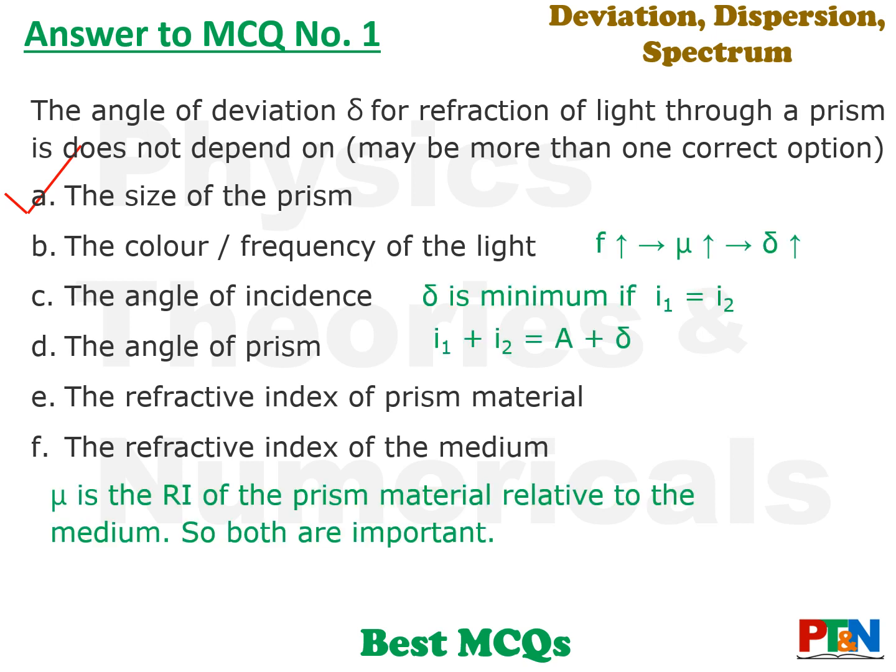The color or frequency of light: if frequency increases, then refractive index increases and delta also increases. Angle of incidence: we know delta is minimum when I1 equals I2, so it is influenced by angle of incidence. Angle of prism also has a role because we know the relationship I1 + I2 = A + delta. Refractive index of prism material and refractive index of medium together give the relative refractive index, so both are important. Delta will be different if the prism is put in water compared to air, so refractive index of the medium also matters.